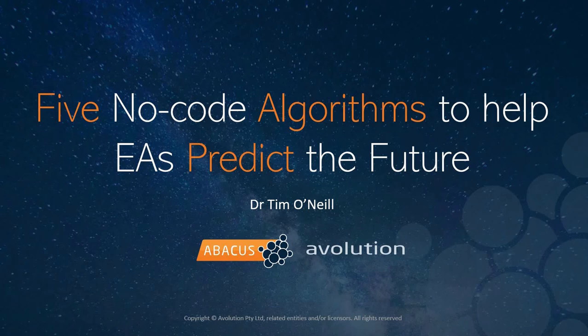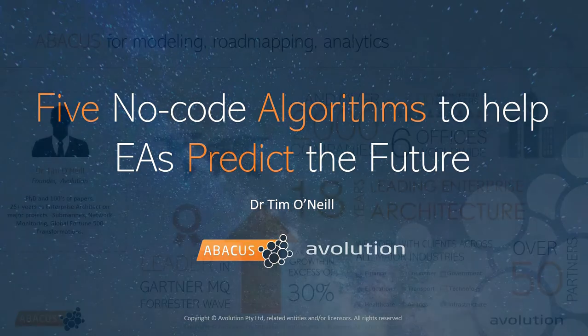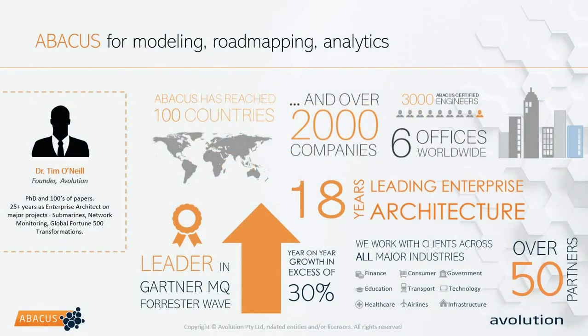Thank you for joining me today. We're going to be looking at no-code algorithms that can help you predict the future. My name's Tim O'Neill. I've been with Evolution since they started, almost 20 years ago. Evolution is a company that now works in over 100 countries. We've got more than 2,000 companies that we work with, several partners, and offices all around the world. We're a leader in the magic quadrant.